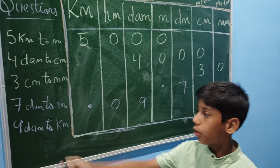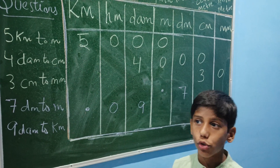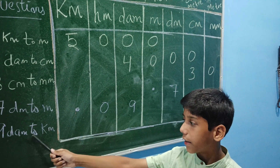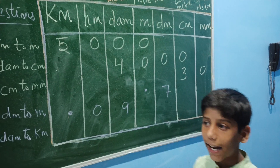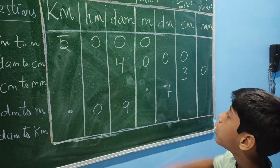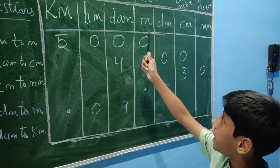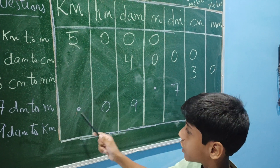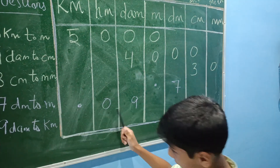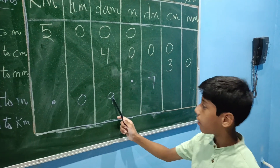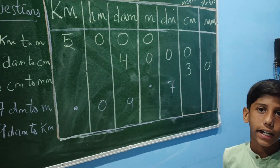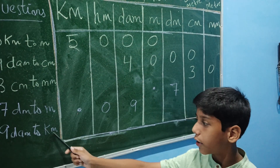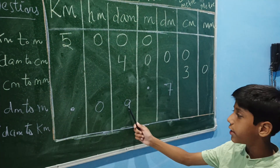Now we have to convert 9 decimeter to kilometer. Checking the left side, we divide by 10. So dividing 9 decimeter, the answer is 0.09. So 9 decimeter to kilometer is 0.09.